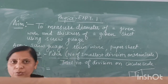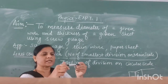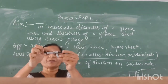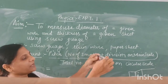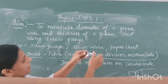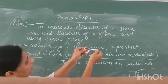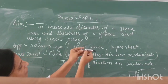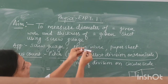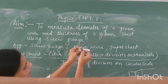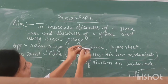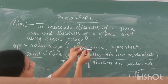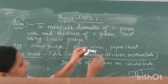In the screw gauge there are two scales: a circular scale and a main scale. The main scale starts from 0, and after 0 there are a number of lines. In between 0 and 5 there are 4 lines.